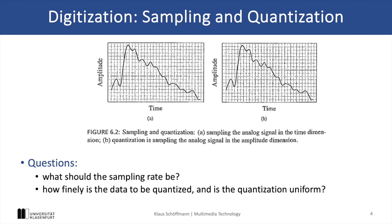Basically the key question here is how finely the signal should be sampled and how uniformly it should be quantized. So this means how dense our grid should be in both dimensions.